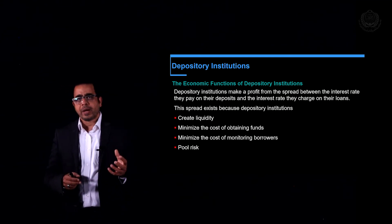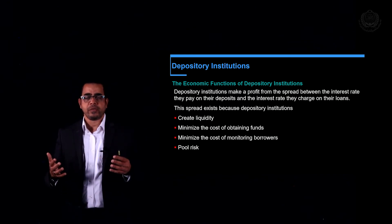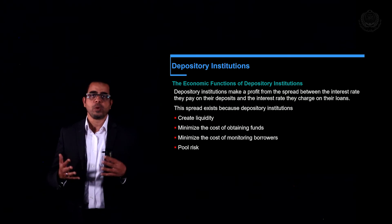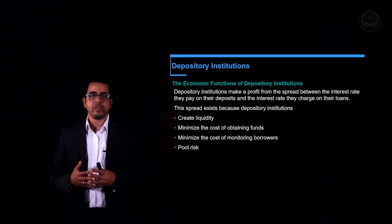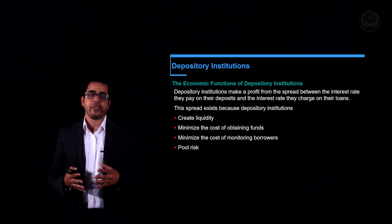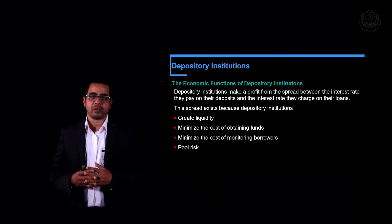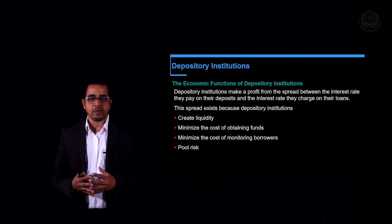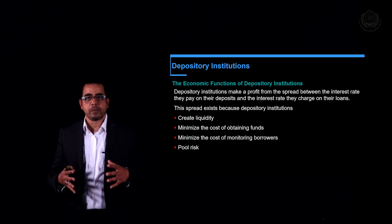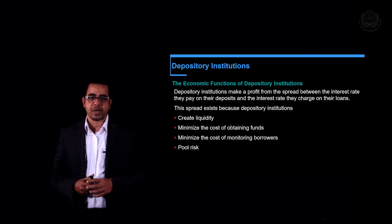What about pooling risk? If you lend your money to one person and that person goes bankrupt, your money vanishes. However, in the case of banks, if one of their borrowers goes out of business, the bank is not out of business because other borrowers cover for the one that failed. This is what we call pooling risk — instead of putting all eggs in one basket, we split them across different baskets.